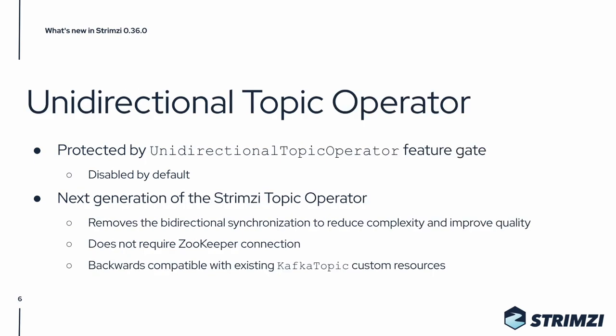Another new feature is the Unidirectional Topic Operator, which is the next generation of the Strimzi Topic Operator. It does not require a ZooKeeper connection anymore, and it removes the bidirectional synchronization to reduce complexity and improve quality. That means that any Kafka topics created directly in the Kafka cluster will not be automatically created as Kubernetes resources as well. The Unidirectional Topic Operator is backwards compatible with existing Kafka Topic custom resources to simplify migration, and it is also protected by a feature gate called Unidirectional Topic Operator, currently disabled by default.